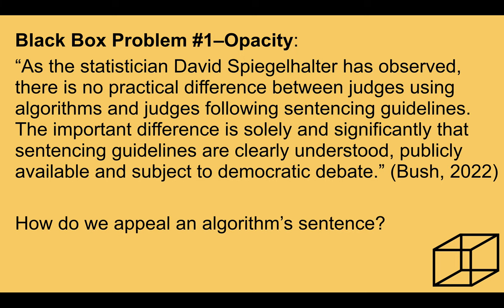One black box problem is opacity. As the statistician David Spiegelhalter has observed, there's no practical difference between judges using algorithms and judges following sentencing guidelines. The important difference is solely and significantly that sentencing guidelines are clearly understood, publicly available, and subject to democratic debate. So how do we appeal an algorithm-based sentence when it's less clearly understood, not necessarily publicly available, and there may not be any type of debate about its inner workings?